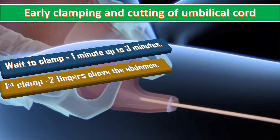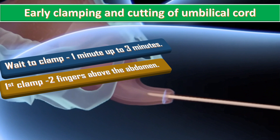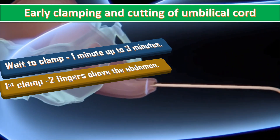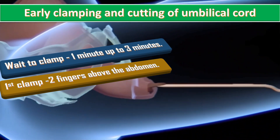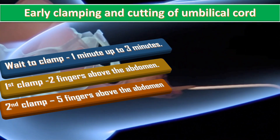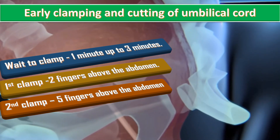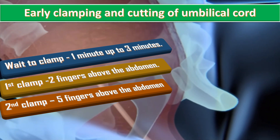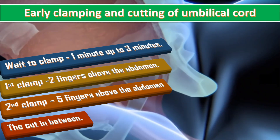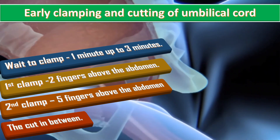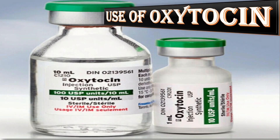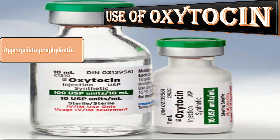The first clamp is applied approximately two fingers above the abdomen, and the second clamp about five fingers above the abdomen, then cut in between. The second component is use of oxytocin — an appropriate prophylactic dose is given.